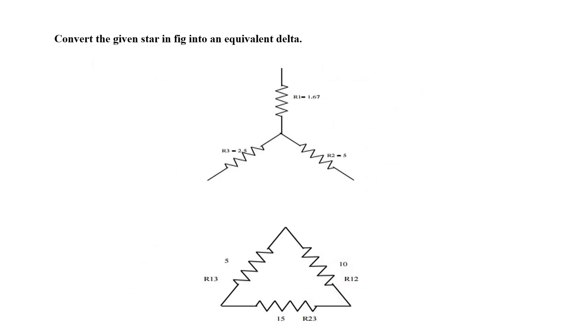Consider the three resistances R1, R2 and R3 connected in star. By star delta conversion, it is always possible to replace this star connected resistance by three equivalent delta connected resistances R12, R23 and R31 between the same terminals. This is called equivalent delta of the given star.